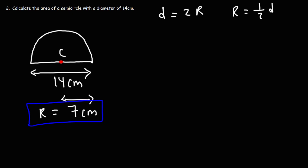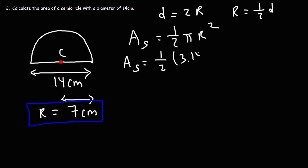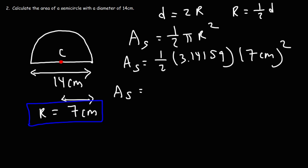Now that we know the radius of the semicircle, this problem becomes very similar to the previous one. All we need to do is use the formula for the area of a semicircle and plug in the radius. For π I'll use 3.14159, and the radius is 7 centimeters. Seven squared, or 7 times 7, is 49. We multiply that by 3.14159 and then by 0.5. The answer is 76.97 square centimeters — that's the area of this semicircle.